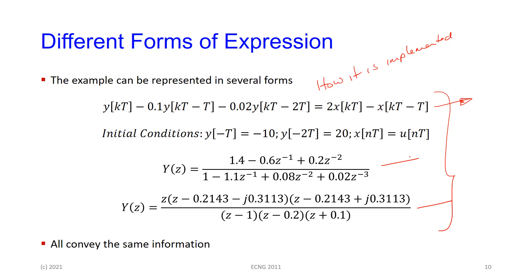This is how you look at the transfer function to check the order and see the information from these. One version tells you where the poles and zeros are. For the transfer function to be stable, the poles have to be inside of the unit circle. This version gives you that, and tells you where the zeros are located. This version here is what you'll use to get the frequency response — just like substituting s equal to j omega in the Laplace domain, there's a substitution you do here.